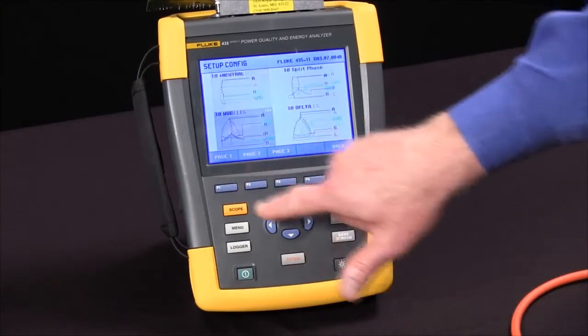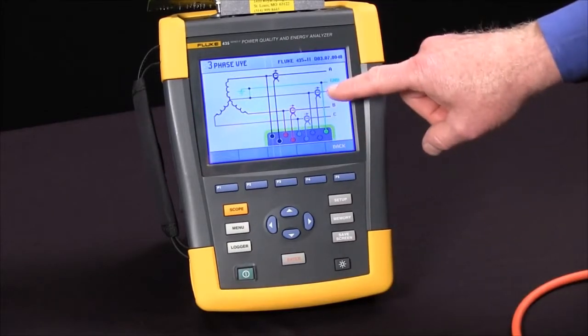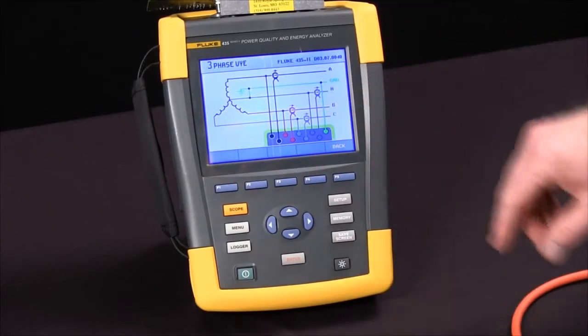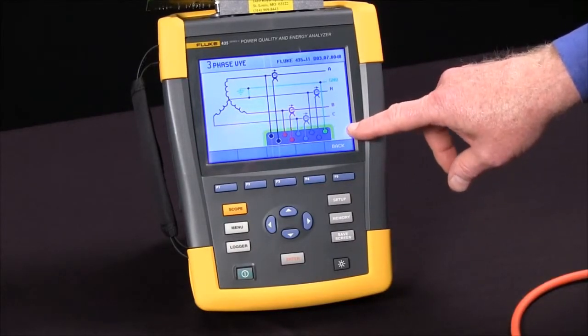If we come back to page one and hit the enter key, we'll see a wiring diagram that shows us where to put our CTs as well as our voltage connections, all color-coded to match the labels on the cables and the inputs to the 435.